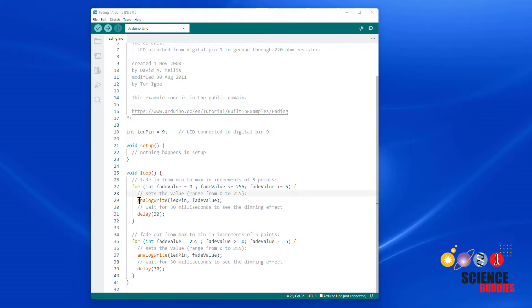Inside that for loop, we have two commands. First, we have the analog write command. You need to tell it what pin you are going to use and then give it a value between zero and 255.